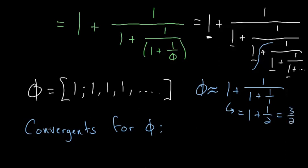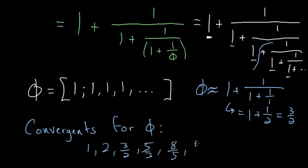So let's write all of the convergents for phi: 1, 2, 3 halves, 5 thirds, 8 fifths, 13 eighths, and this just keeps going. What you can notice is that all of the numbers in the numerators and denominators are Fibonacci numbers.